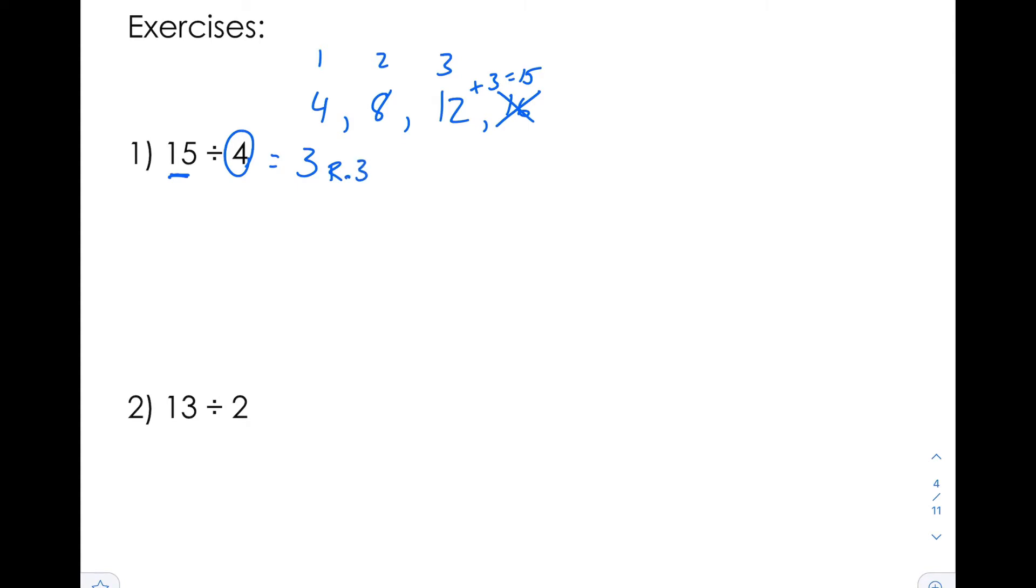And to check our answer, we can take, I'm going to multiply by that. So 3 times 4 is equal to 12, and then we're going to add the remainder, plus 3. If that gets us back to the number that we started with, then that is the correct answer.